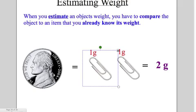We know that one paperclip equals one gram. Therefore, we can estimate the weight of a nickel. One nickel equals about two paperclips, which equals two grams.